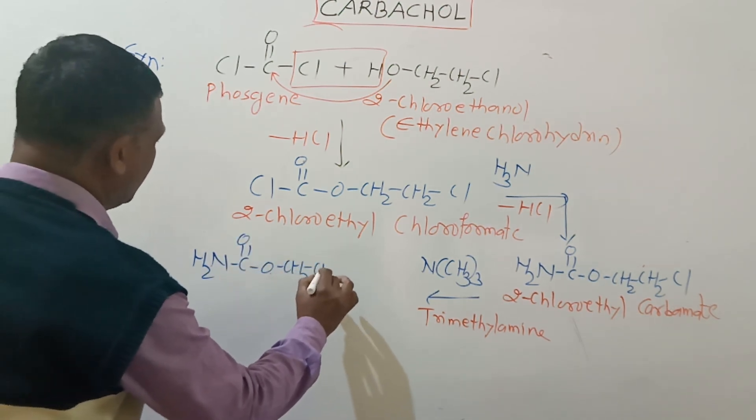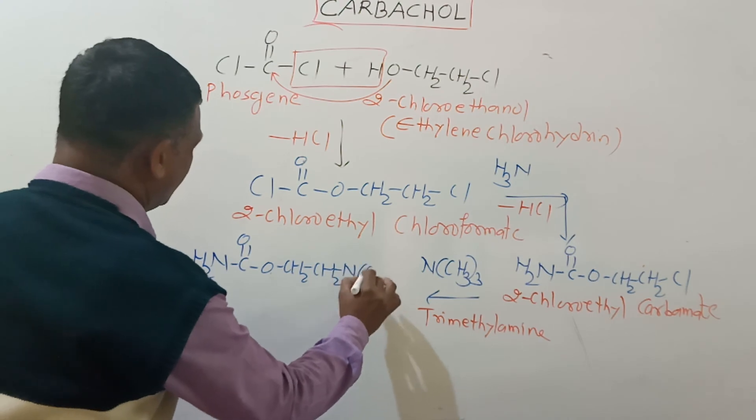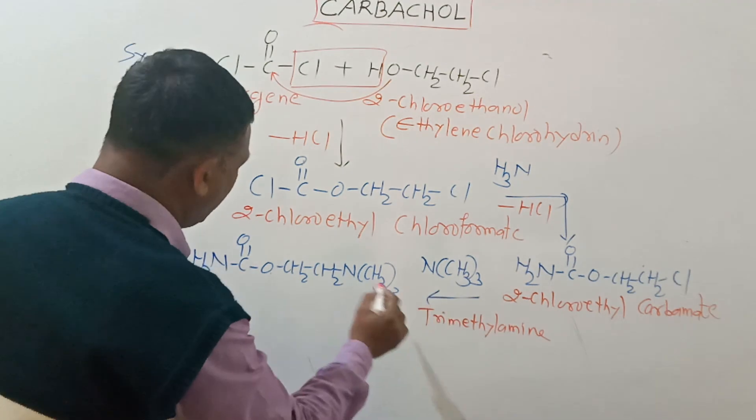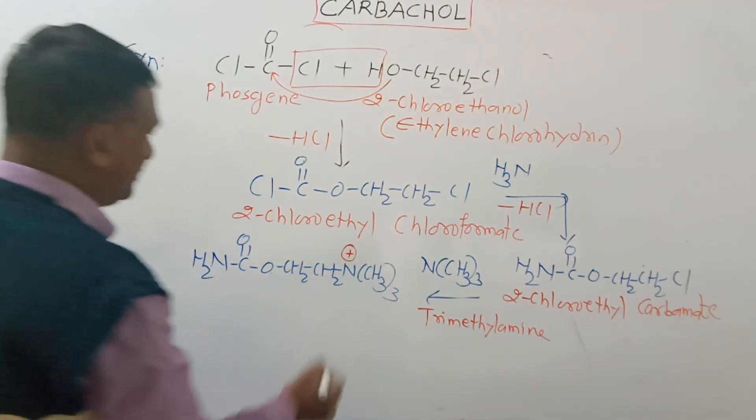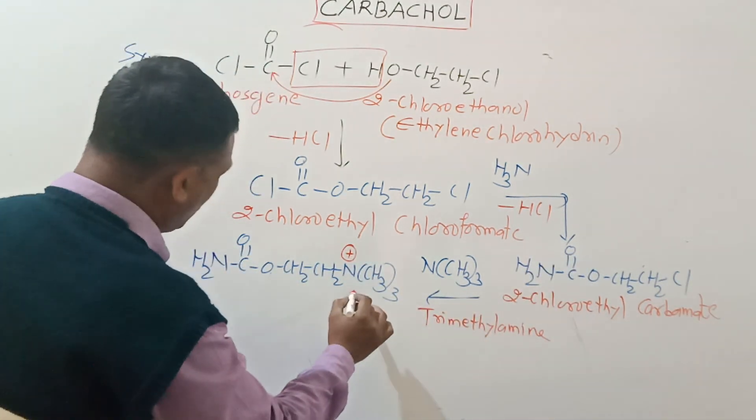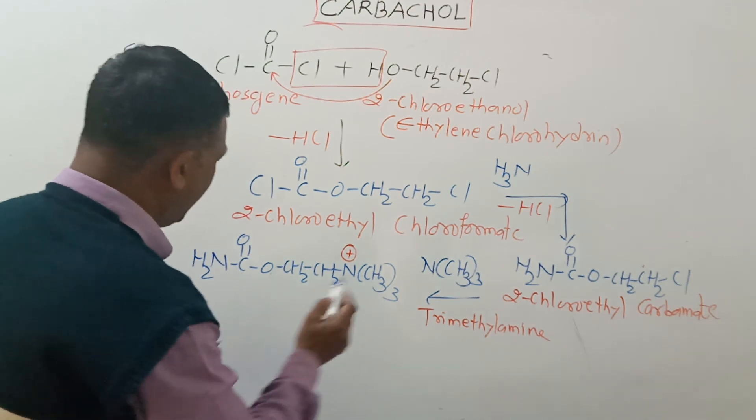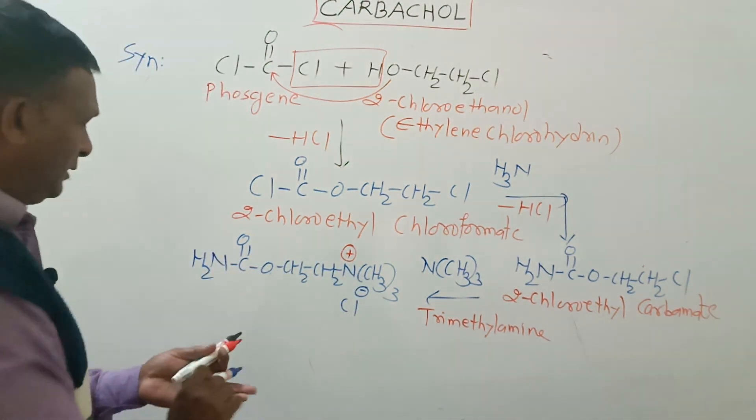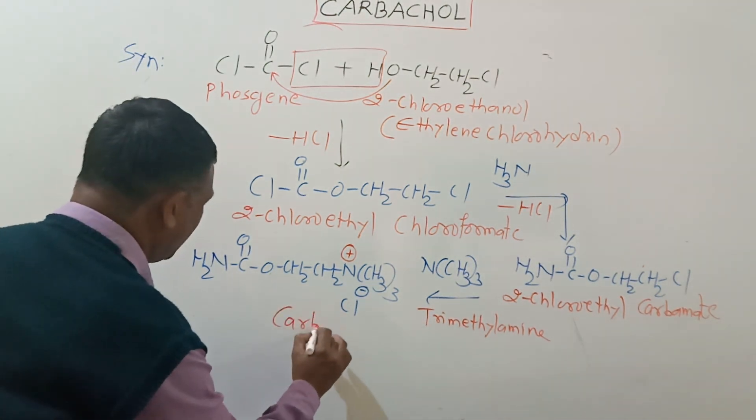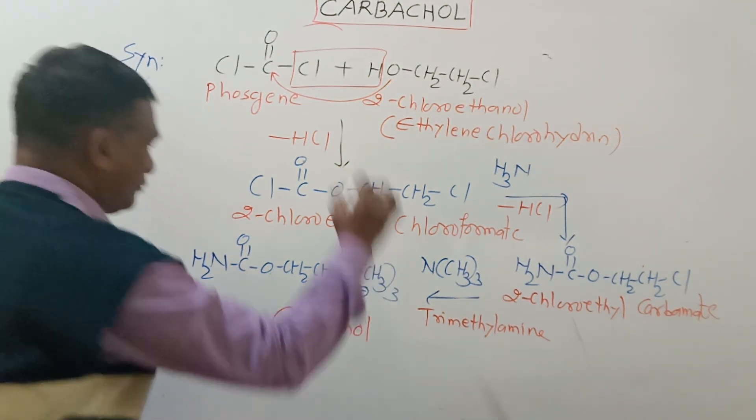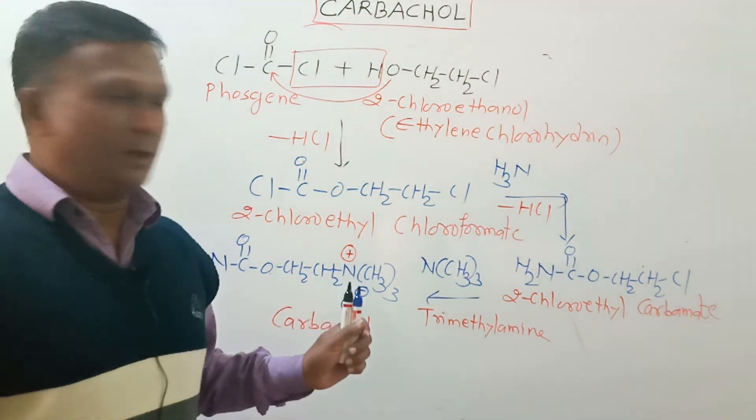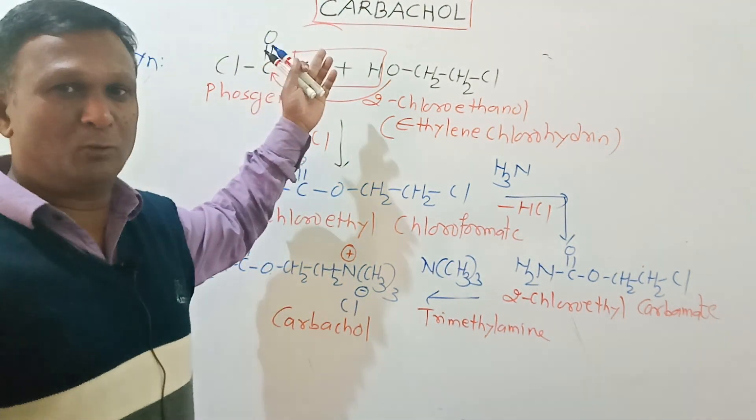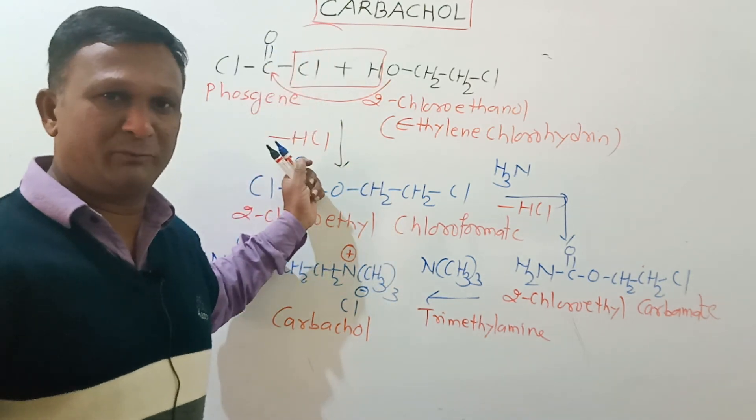Carbachol. Here you can see that when this trimethylamine substitutes the chloride ion, this chloride will remain in ionic bond with this quaternary nitrogen, and this gives us the formation of our desired compound Carbachol. So dear students, that is all about the nomenclature of the compound Carbachol. Thanks for watching the video.